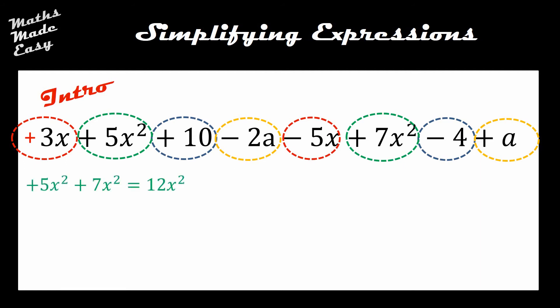So if I take the x squareds to start off with, I can see I've got plus 5x squareds and plus 7x squareds, giving me a total of positive 12x squareds. If I look at the x's I can see that I've got positive 3x and a negative 5x, so when I combine those two I'm going to end up with an overall negative 2x. And just a reminder at this point, don't forget not to get your x squareds and your x's confused, they are totally distinct things to one another.